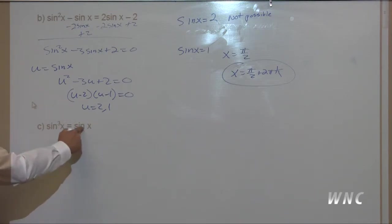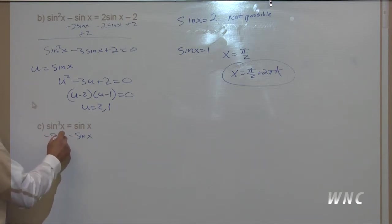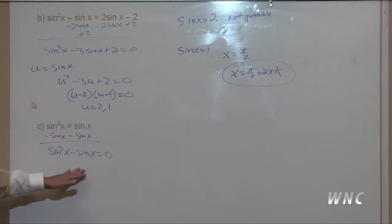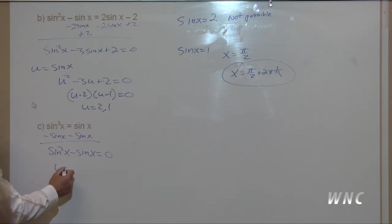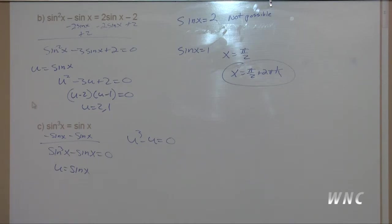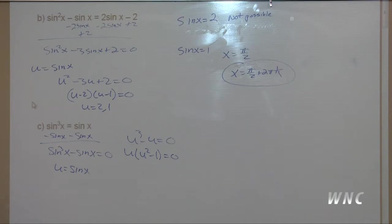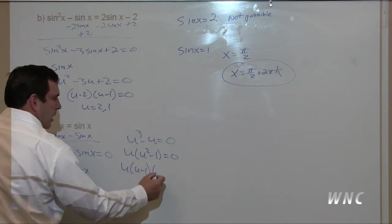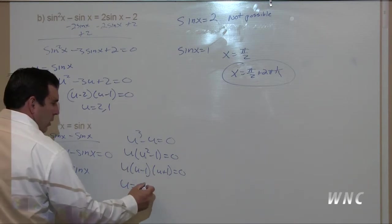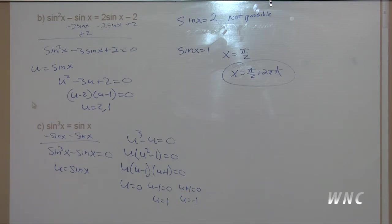The last part of this example: sine cubed x equals sine x. If I subtract sine x from both sides, sine cubed x minus sine x equals zero. This is a cubic equation. Using u substitution with u equals sine x, we have u cubed minus u equals zero. Factor out u: u times u squared minus one equals zero. Factor further: u times u minus one times u plus one equals zero.